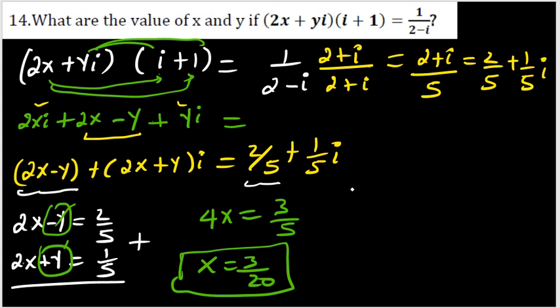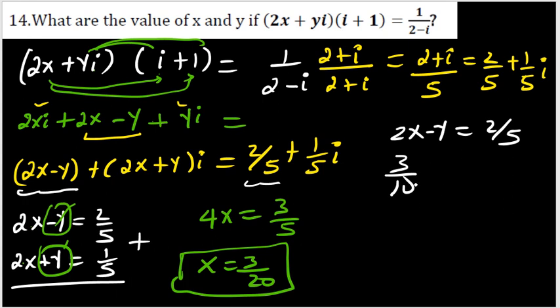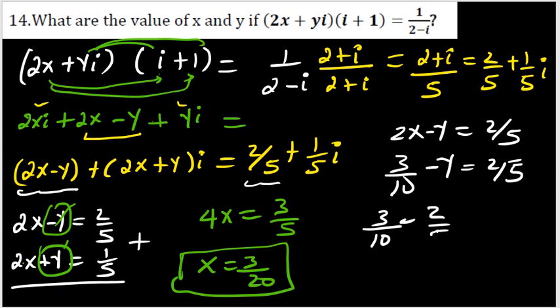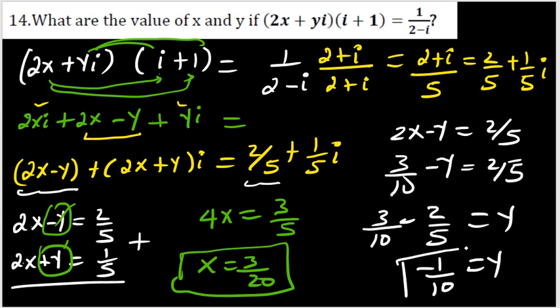To find y, substitute x = 3/20 into the first equation: 2(3/20) - y = 2/5, which gives 3/10 - y = 2/5. Rearranging: y = 3/10 - 2/5 = 3/10 - 4/10 = -1/10. So x = 3/20 and y = -1/10.